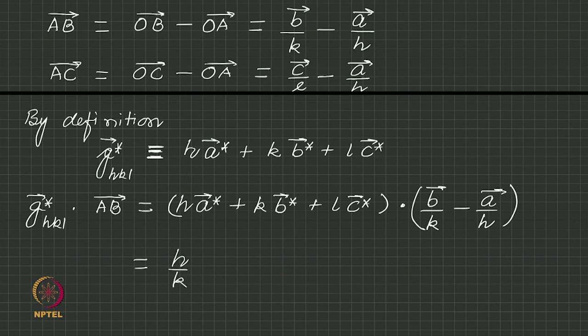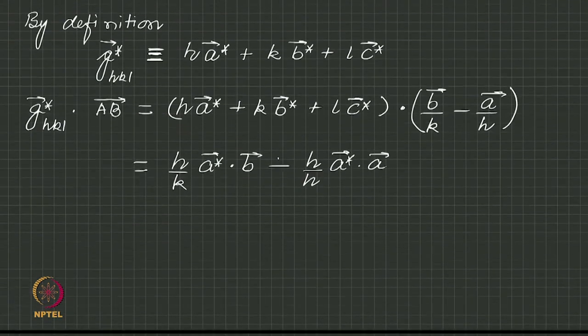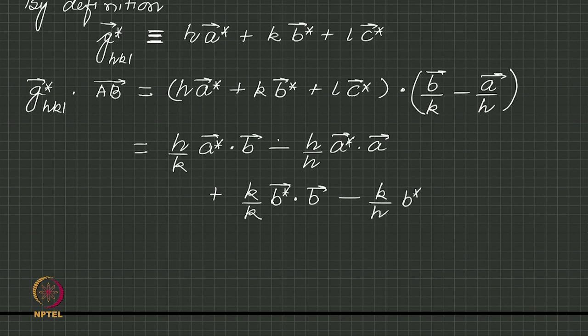h by k a star dot b minus h by h a star dot a plus k by k b star dot b minus k by h b star dot a plus l by k b star dot b minus l by h b star dot a.